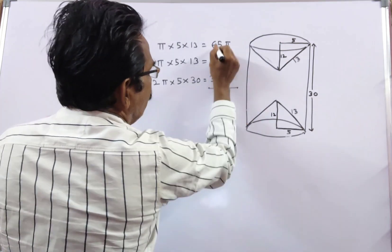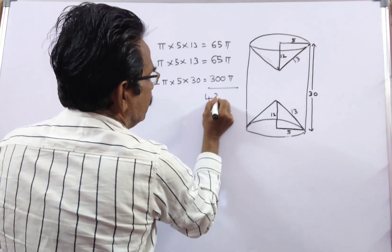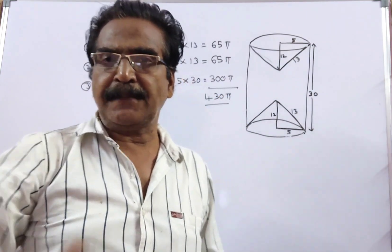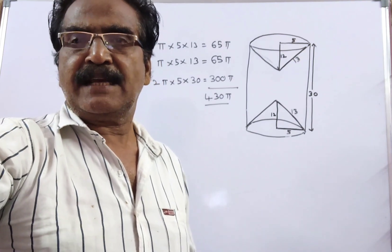So total: 130 plus 300 equals 430 pi is the total surface area of the remaining solid. Thank you friends, have a nice day.